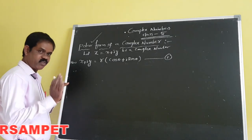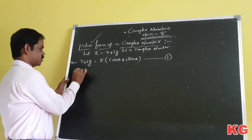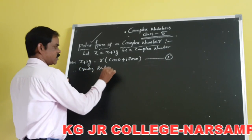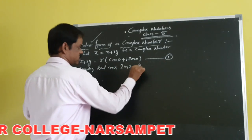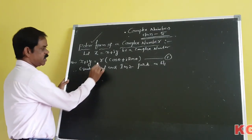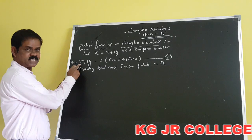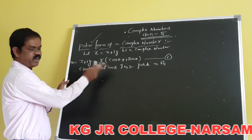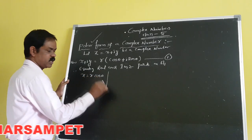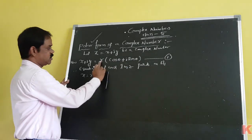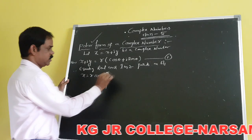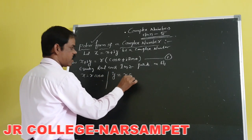From the standard form, we equate the real and imaginary parts on both sides of this equation. The real part on the right-hand side is R cos θ, and the real part on the left-hand side is X. Equating both, we get X equals R cos θ. Similarly, the imaginary part on the right side is R sin θ, and the left side imaginary part is Y, giving us Y equals R sin θ.